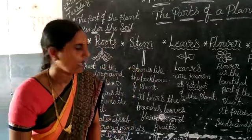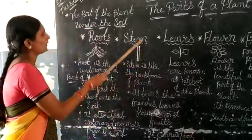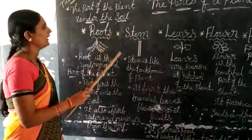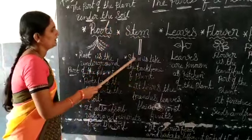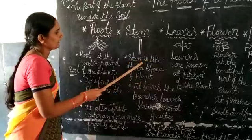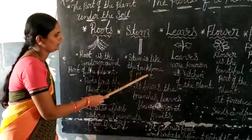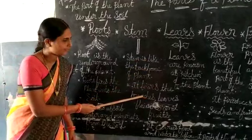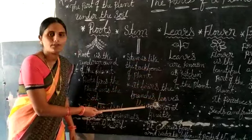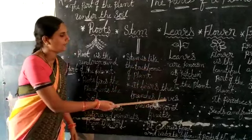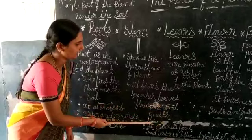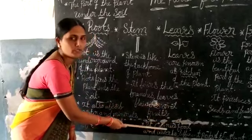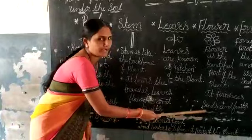Now let's discuss about stem. The stem is the part of the plant above the soil. It bears the branches, leaves, flowers and fruits. It carries food and water to different parts of the plant.